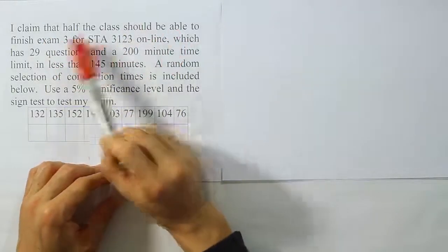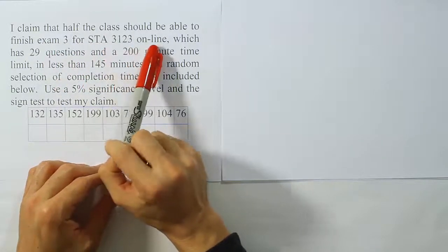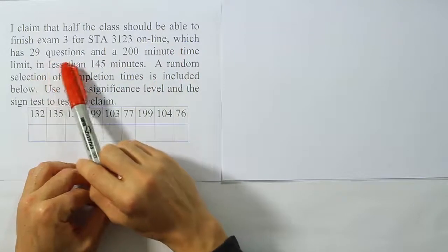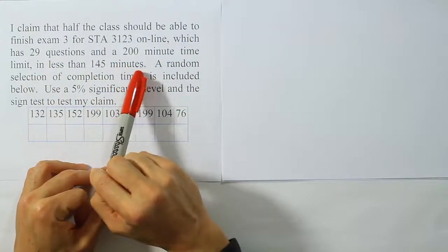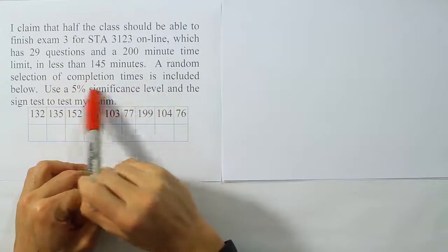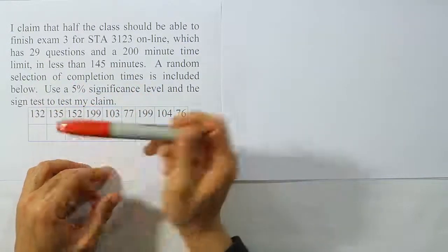I claim that half the class should be able to finish exam 3 for my STA 3123 online class, which has 29 questions and a 200 minute time limit, in less than 145 minutes. A random selection of completion times is included below. Use a 5% significance level and the sign test to test my claim.